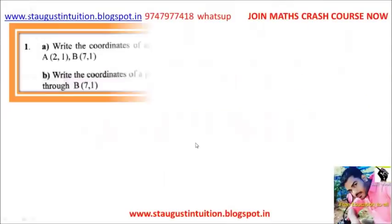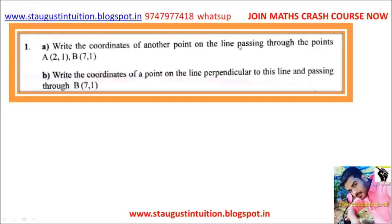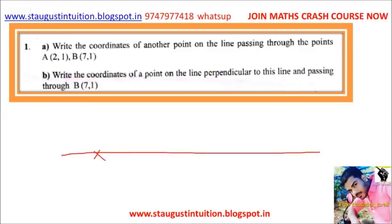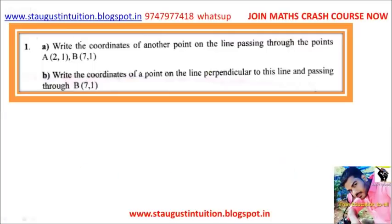Question number 1, Question B: write the coordinates of a point on the line perpendicular to this line and passing through B(7,1). Write the coordinates of another point on the line passing through the points A(2,1) and B(7,1).